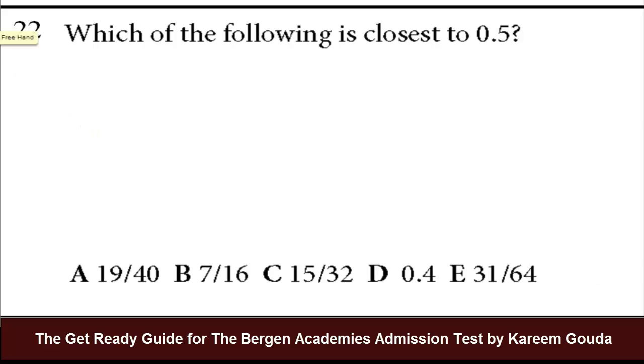Number 22. Which of the following is closest to half? 0.5. Now let's look at the answer choices first. They're all fractions except for D. So I need to rewrite D as a fraction so that I can compare them easily. So 0.4 is 4 over 10.